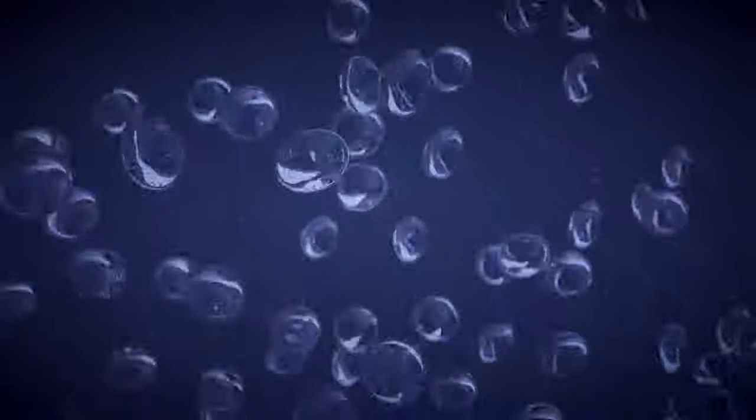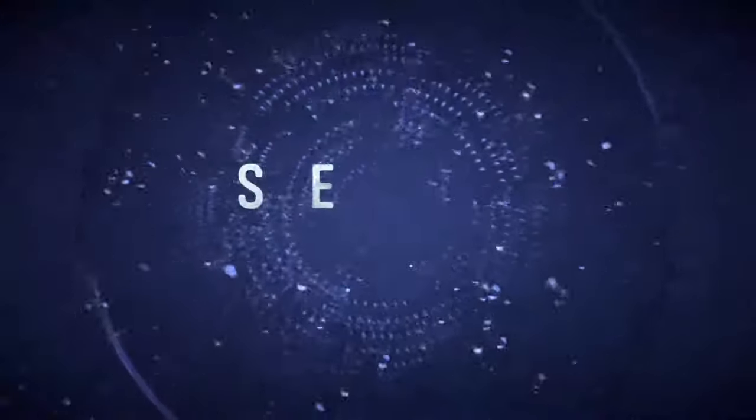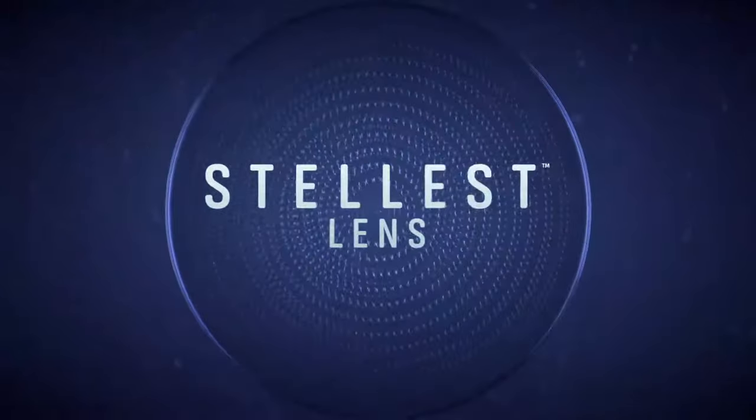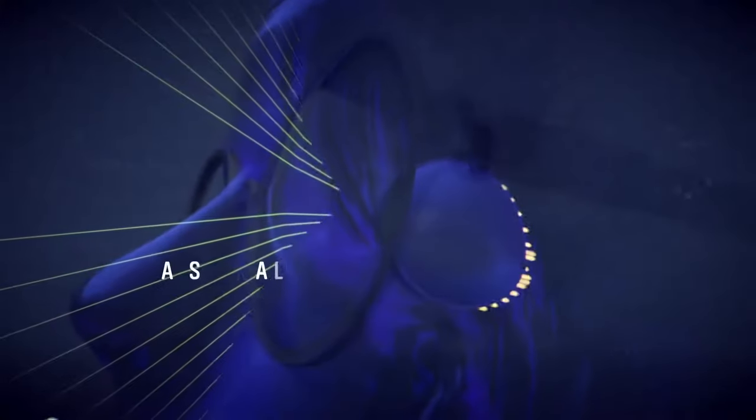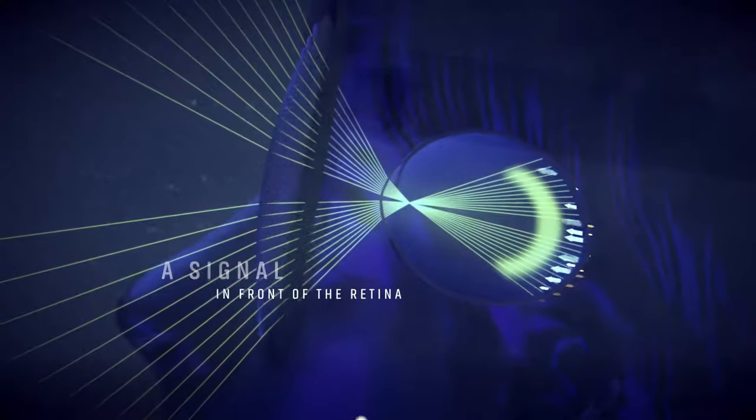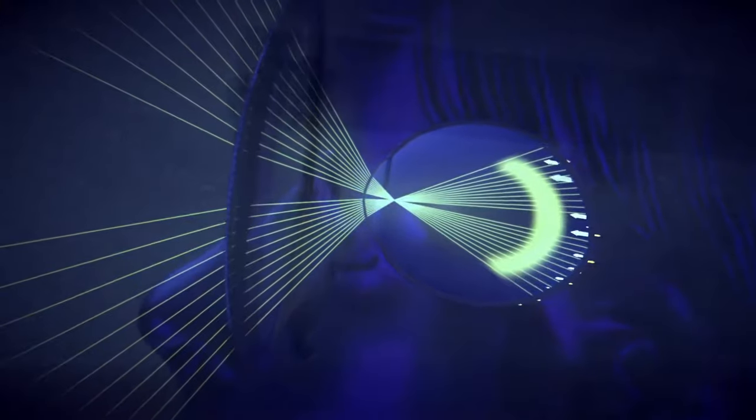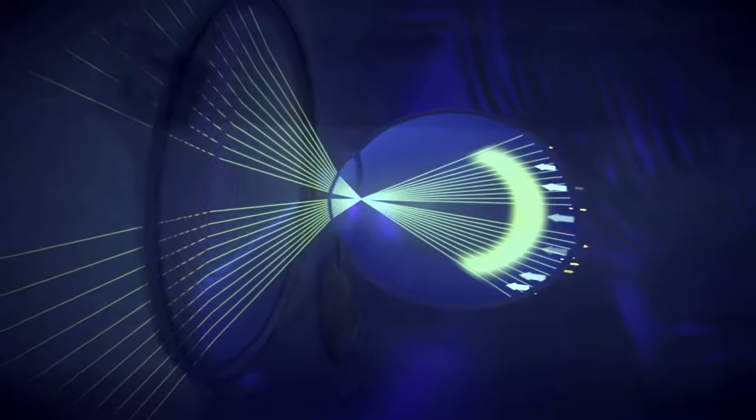Essilor now revolutionizes this state of fact and unveils the Stellest lens. The Stellest lens creates a signal into the eye that acts as a shield against eye elongation and therefore effectively slows down myopia progression.